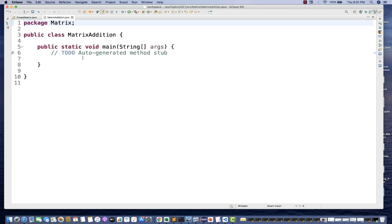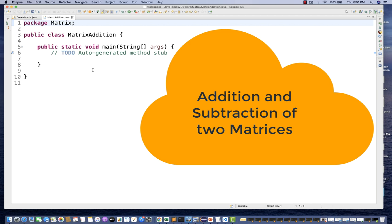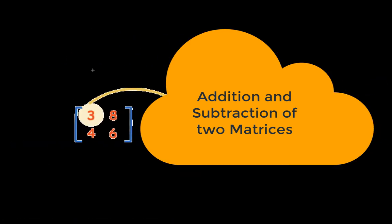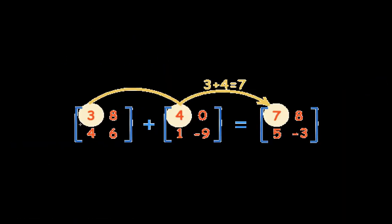Today we are going to talk about how to add two matrices. If you know the mathematical formula, matrices can be added element to element. If you see this diagram, I have two matrices here, and whenever you have to add two matrices it's like 3 plus 4, element to element.